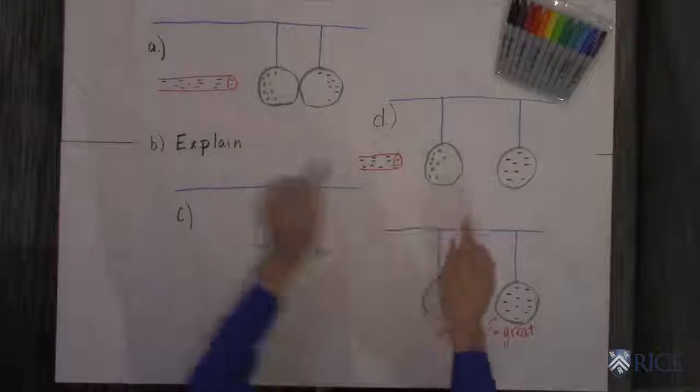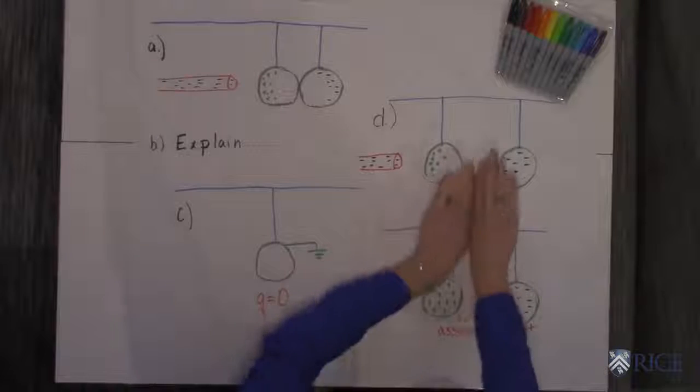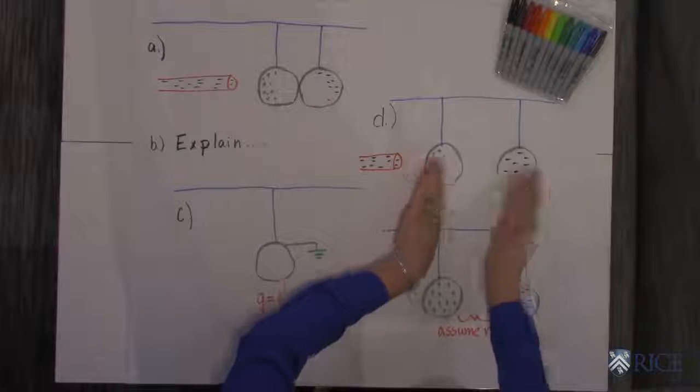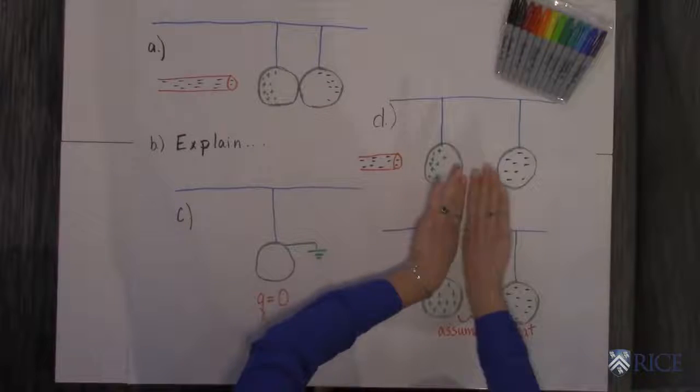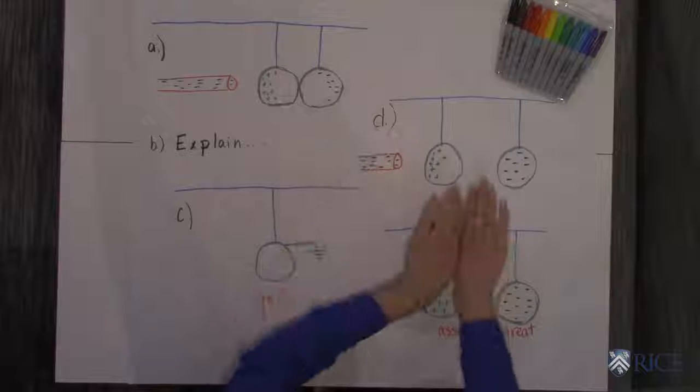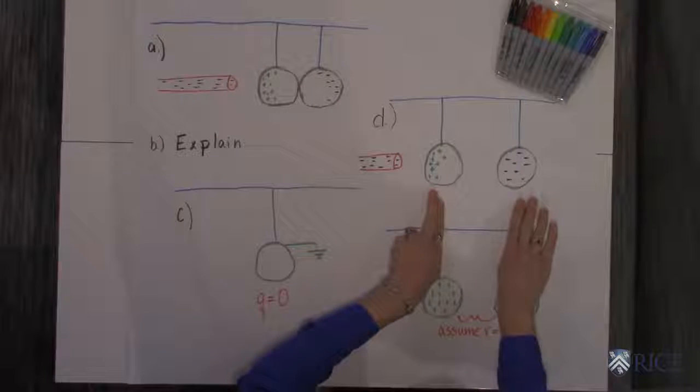The third part of it says, what happens if while the rod is still next to them you separate the charges, the spheres? What happens to the charges on the spheres when you separate them? So you've got the rod, you separate the spheres.